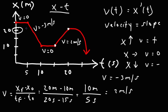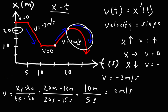As we can see, whenever the position function is decreasing, the velocity is going to be negative. When the position function is increasing, the velocity is going to be positive. And when the position function is constant, the velocity is zero. During this last part, notice that the position is decreasing but at an accelerated rate, so there's going to be acceleration. Because the position is decreasing, the velocity will be negative, but the velocity is not constant — it's becoming more negative, meaning the velocity is decreasing.